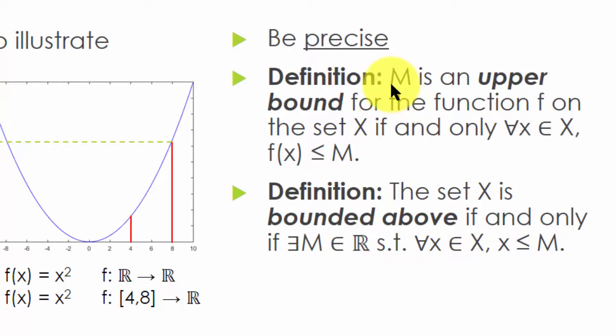So let's compare these two definitions. The first definition is about upper bound M. It says, M is upper bound for the function f on the set X, if and only if for all small x in big X, f(x) is less than or equal to M. The second definition is about a set X being bounded above. It says, the set X is bounded above if and only if there is M in the reals, such that for all small x in big X, small x is less than or equal to M.